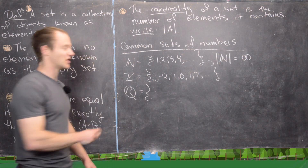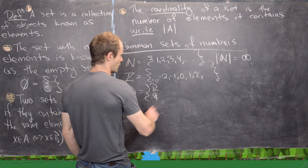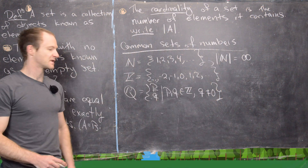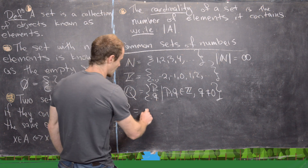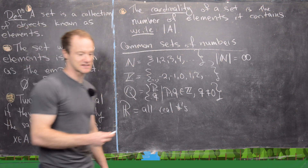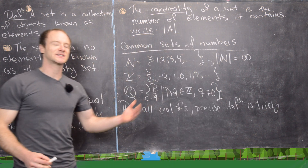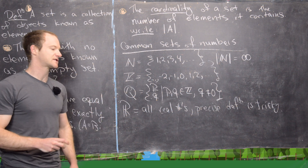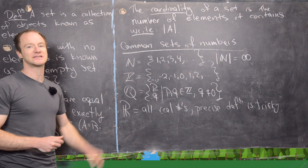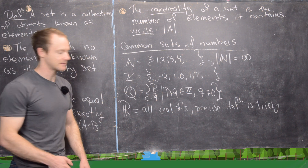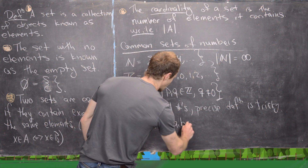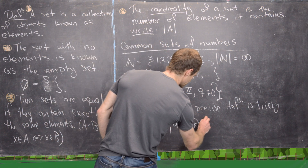The rational numbers are all ratios of integers: {p/q such that p and q are integers, but q ≠ 0}, because we can't divide by zero. Next we have the real numbers — I'll just describe these as all real numbers. The precise definition is tricky; in many real analysis books it's saved for the appendix or assigned as a final project. We may see it in my upcoming real analysis video series.